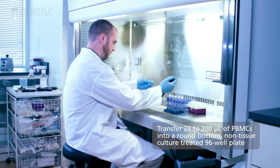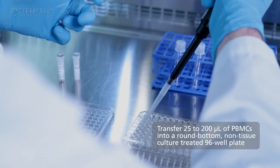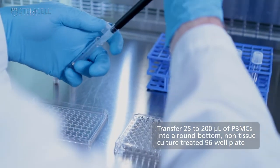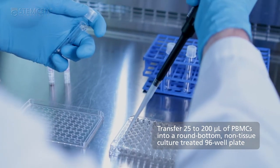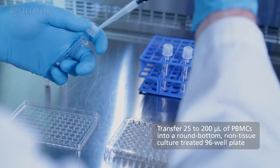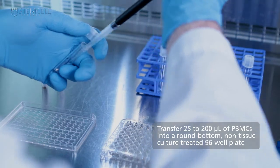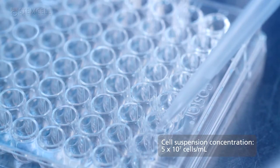First, transfer 25 to 200 microliters of PBMCs into a round-bottom, non-tissue culture-treated 96-well plate. The cell suspension concentration should be 5x10^7 cells per ml.